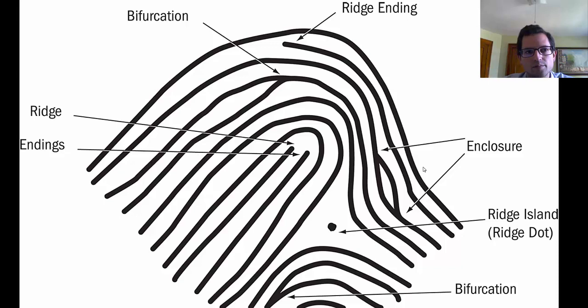So here you can see in this image a number of ridge endings, bifurcations, and enclosures. On the left side it says ridge endings and you can see the arrows point to places where some ridges have ended. Then we continue clockwise. You can see a first bifurcation where a friction ridge is coming from the lower right and splits into two ridges. Continuing clockwise we see another ridge ending, then an enclosure, which is basically a bifurcation followed by a coming back together. Then we see a ridge island or ridge dot, a single very short ridge. And at the bottom there we can see another bifurcation.